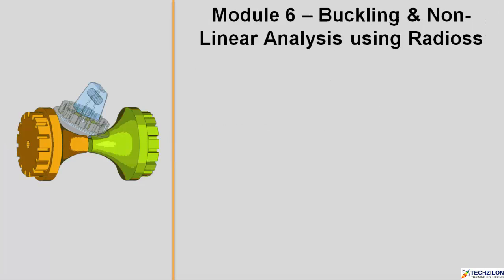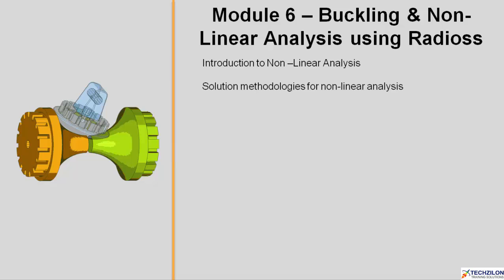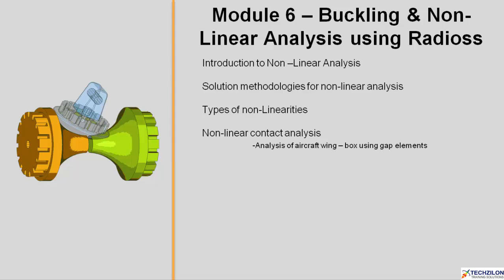Module 6 consists of buckling and non-linear analysis using Radios. You will be introduced to non-linear analysis and solution methodologies for non-linear analysis, followed by types of non-linearities. Under non-linear contact analysis, you will learn through analysis of an aircraft wing box using gap elements, modeling contact pairs for a typical 3D bolted joint, and non-linear contact analysis for a chassis subframe.